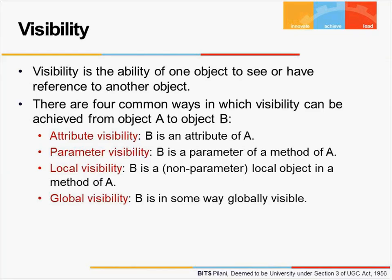Visibility is the ability of one object to see or have a reference to another object. An object will be able to send messages or access another object only if the other object is visible to the first object. There are four common ways in which visibility can be achieved from object A to object B: attribute visibility, parameter visibility, local visibility, and global visibility.